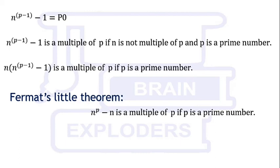Therefore, the difference of n and the Pth power of n is a multiple of P, where P is a prime number. This theorem is known as Fermat's Little Theorem.